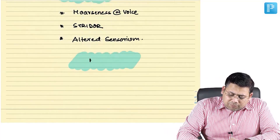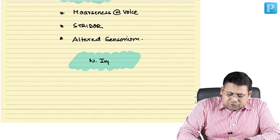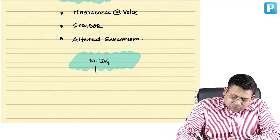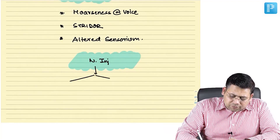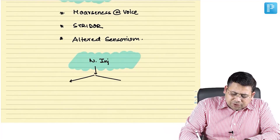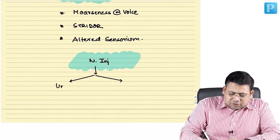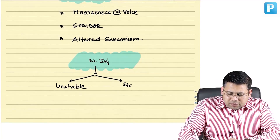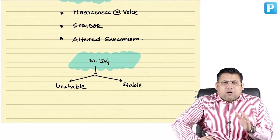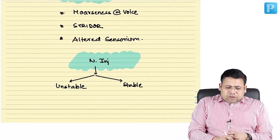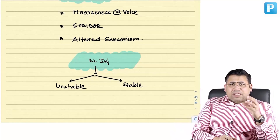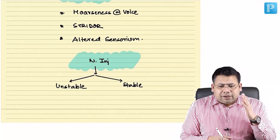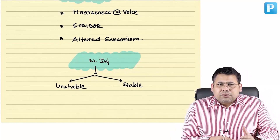When managing a patient of neck injury, the first thing to check is whether the patient is unstable or stable. If the patient is unstable, you think about vascular injury and are tempted to go for a surgical option.